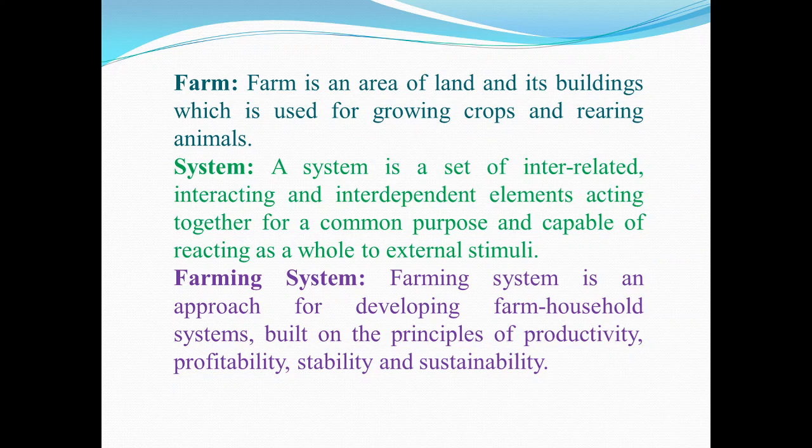First of all, what is a farm? A farm is an area of land and its buildings which is used for growing crops and rearing animals. A farm is an area of land devoted primarily to agricultural processes with the primary objective of producing food and other crops. There are many specialized farms such as dairy farm, poultry farm, vegetable farm, fruit farm, etc.